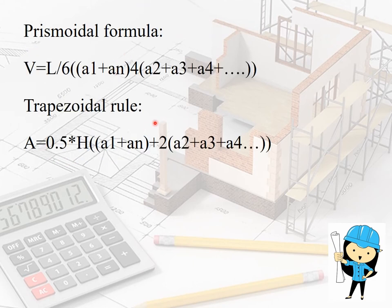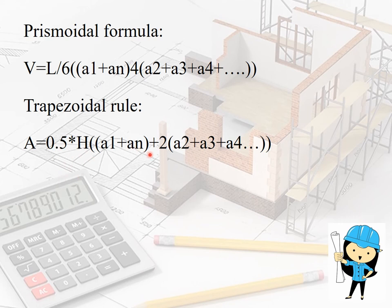Two important formulas are repeatedly asked in competitive exams. The prismoidal formula to calculate volume is: V = L/6 × (Area of first + Area of last + 4 × intermediate values). The trapezoidal formula is: Area = h/2 × (A1 + An + 2 × sum of intermediate values). The prismoidal formula is used to calculate volume; the trapezoidal formula is used to calculate area.